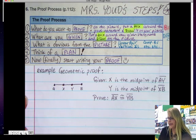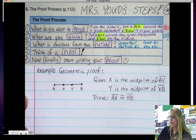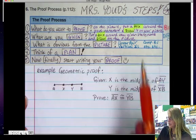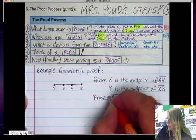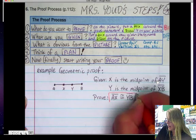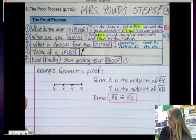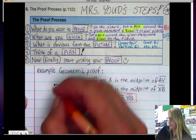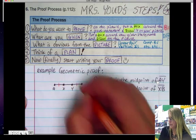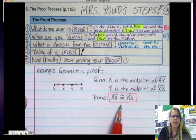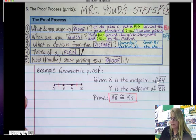So let's go ahead and get started. The first step is, remember, look at what you want to prove. So let's take a look at that. We are told that we want to prove that AX is congruent to YB. So I'm going to go to my picture, and I'm going to mark that on my picture. And notice I'm using the bright color orange to put that on my picture.